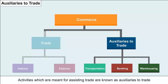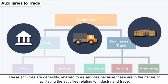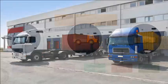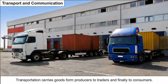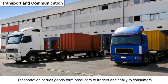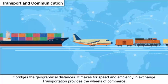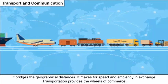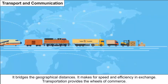Auxiliaries to trade: activities meant for assisting trade are known as auxiliaries to trade. These are generally referred to as services, facilitating activities relating to industry and trade. Transportation carries goods from producers to traders and finally to consumers. It bridges geographical distances and makes for speed and efficiency in exchange. Transportation provides the wheels of commerce.